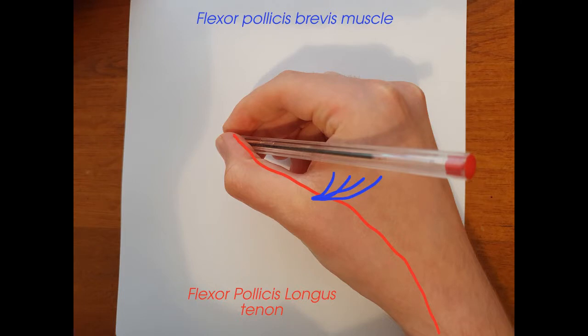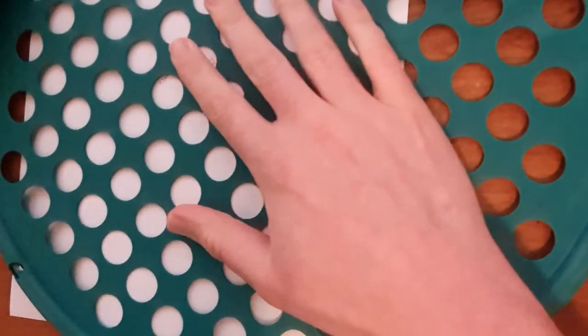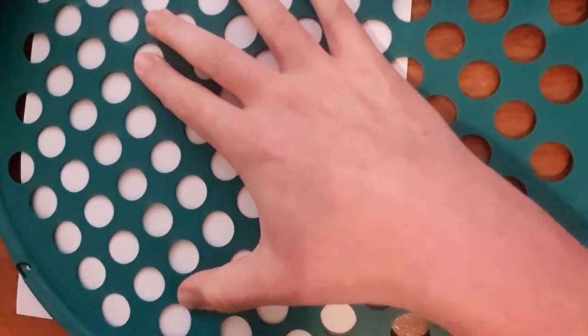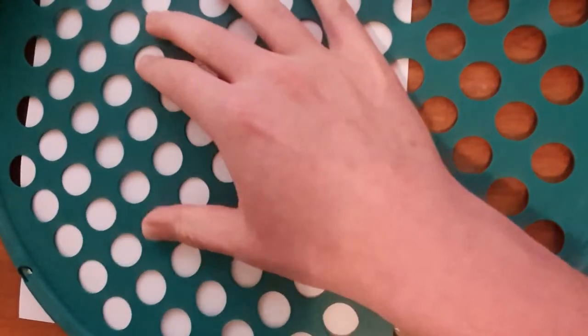Next thing, we want to strengthen flexor pollicis longus. This muscle is important because it hooks up all the way back in your forearm and its tendon goes right to the tip of your thumb. It's the one that's going to give your thumb that curve to it rather than that collapsed sort of shape. To do this, you want to train your thumb so that the furthest tip of it and just the furthest tip of it can bend against resistance. Here you see me strengthening it on something called a power web, but you can get away with just an elastic band.